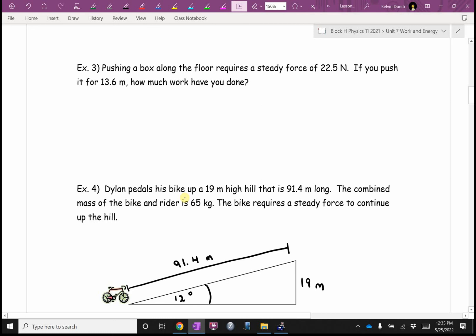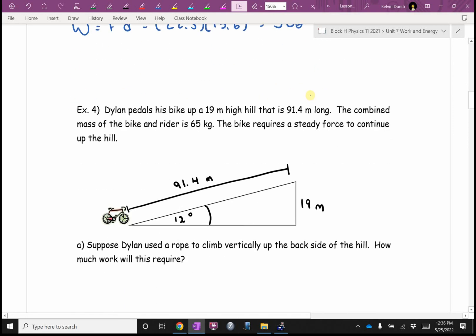Next page, example three. Pushing a box along the floor requires a steady force of 22.5 newtons. If you push it for 13.6 meters how much work have you done? Emily what's this question asking me to find? Work. Josh, work is what times what? Force times distance. Double check is the force constant? It says steady. So I think we can just plug and chug. Emily it's going to be 22.5 times 13.6, which is 306 joules.